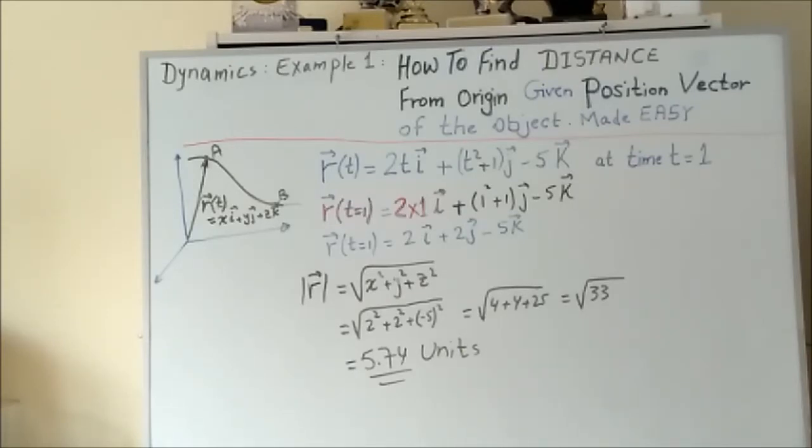Example one: how to find the distance from the origin to a point where that point is described by a position vector.